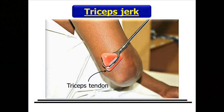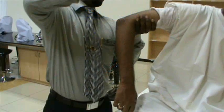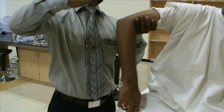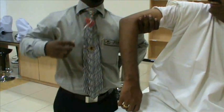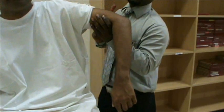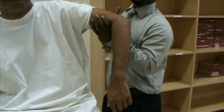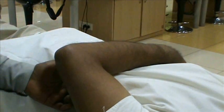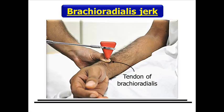For eliciting triceps jerk, the subject's arm is appropriately positioned. Tap the triceps tendon directly above the olecranon. Observe the contraction of the triceps muscle and the extension of the elbow.